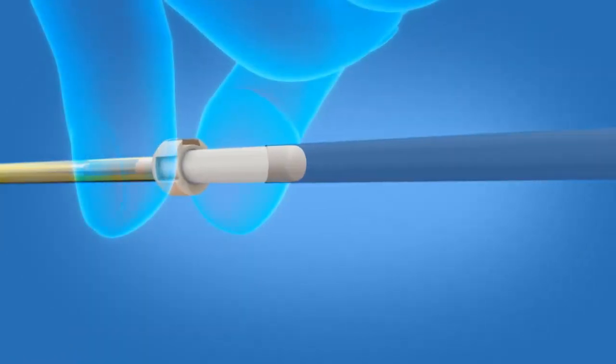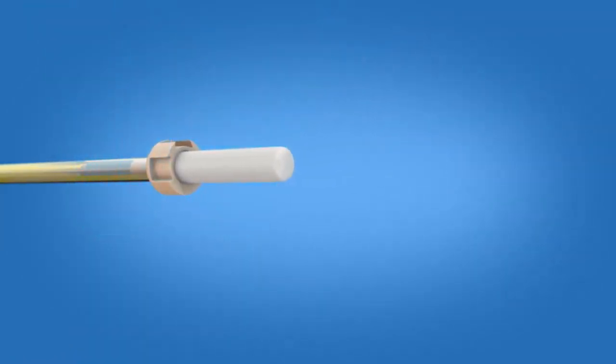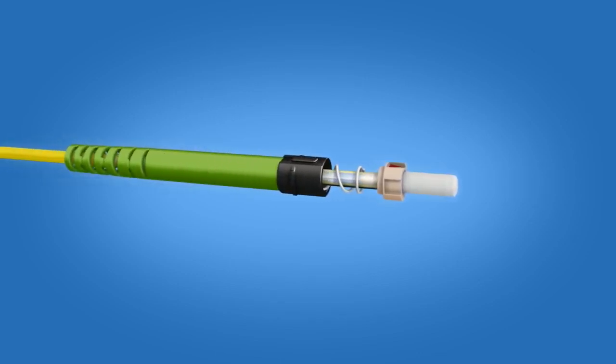Hold the base of the ferrule unit and remove the transfer tubing. Slide the boot unit up to the ferrule.